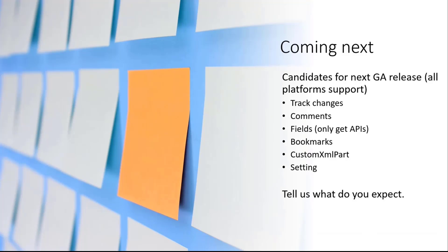Coming next, here are the candidates for the next GA release. By GA release, I mean a release that supports all platforms. We will have a more frequent cadence of delivering Word APIs in the coming months or years. The most recent next one will probably come in about six months, by the end of this year or early next year. In that set, we will include track changes, comments, and similar features.